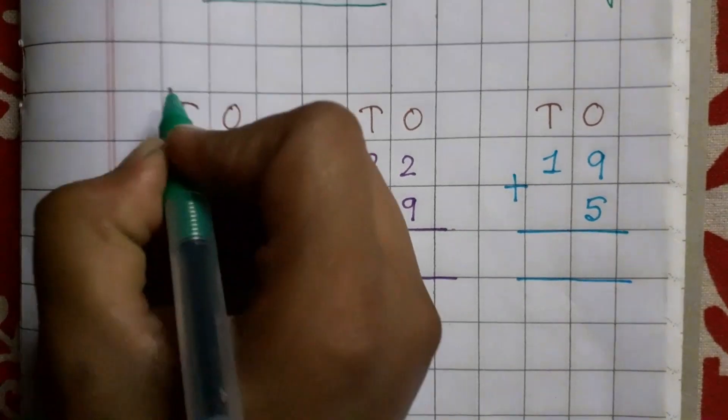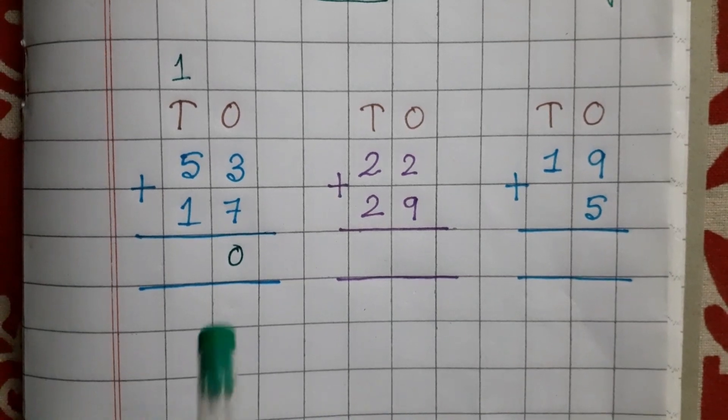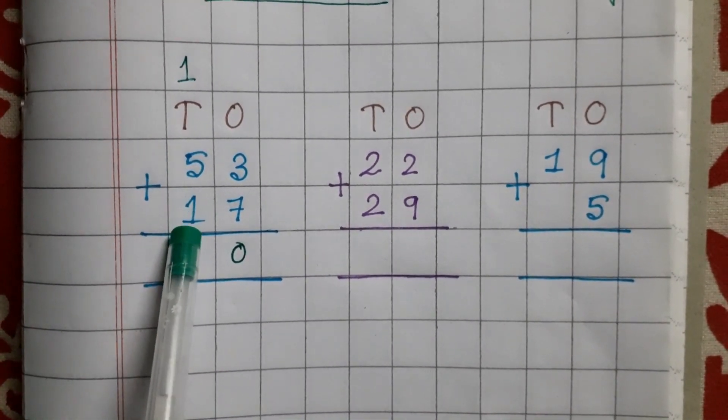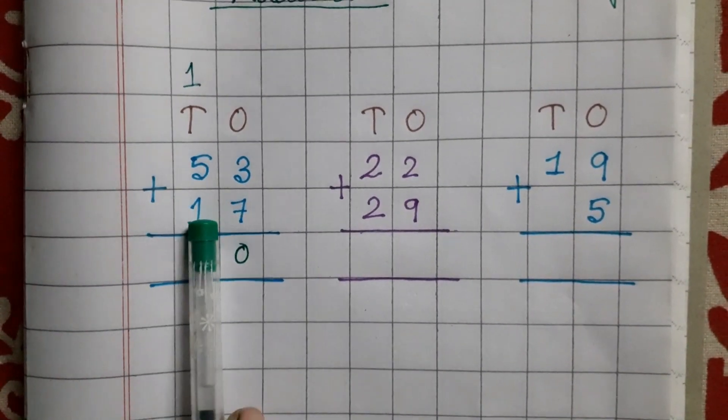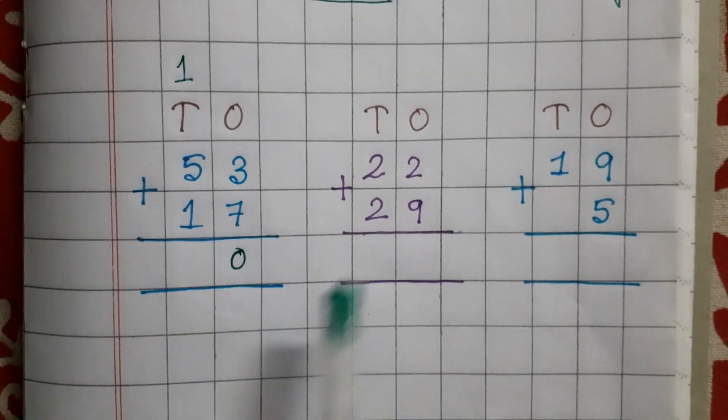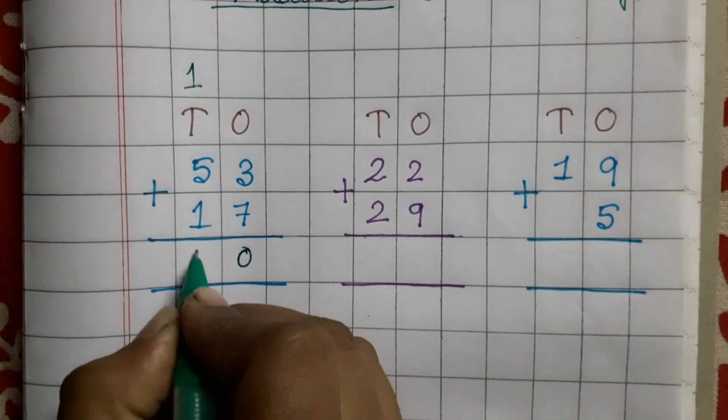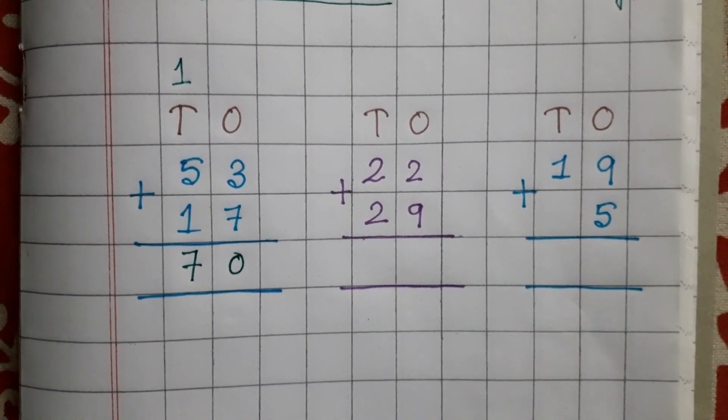So let's write 1, okay? Now, if you add 5 and 1, how much you are getting? You will get 6. With that 6, again you add 1. So after 6, if you go one more number, you get 7. So that is your answer. Okay?